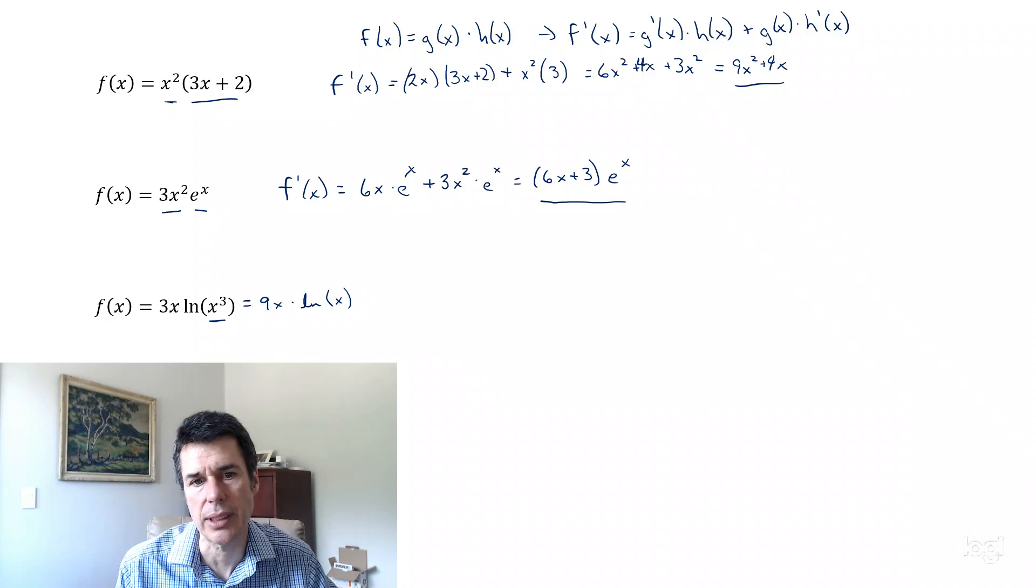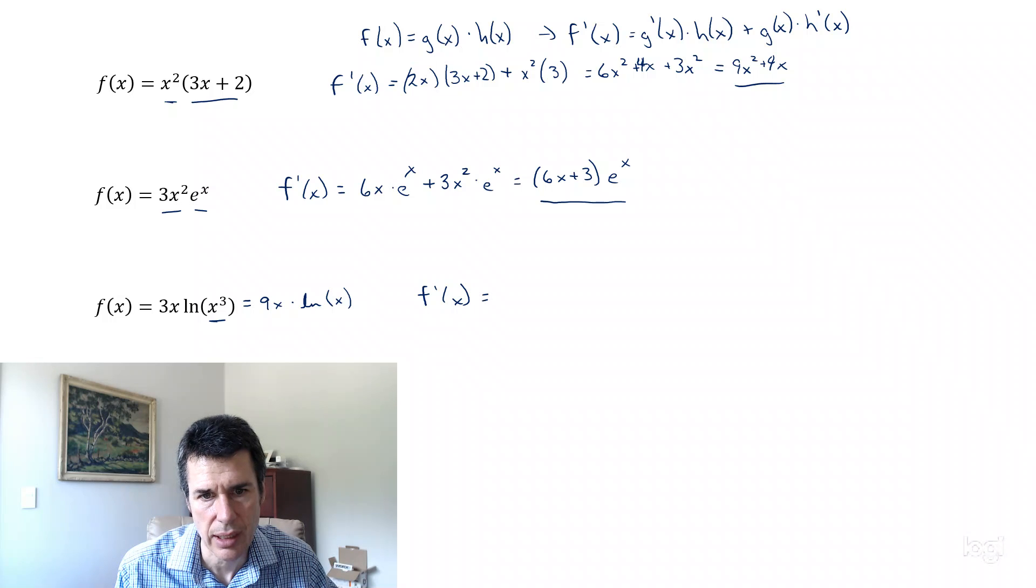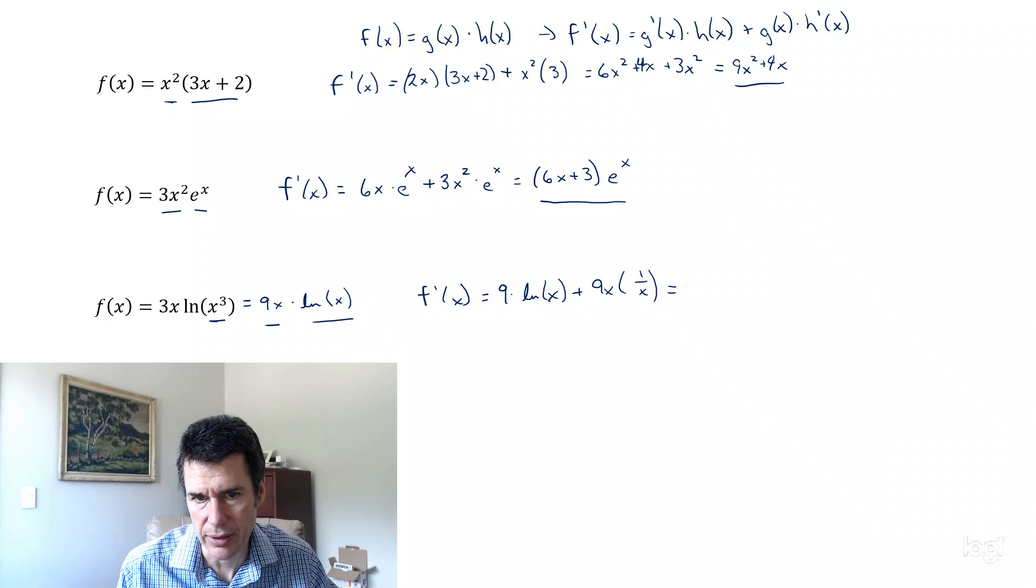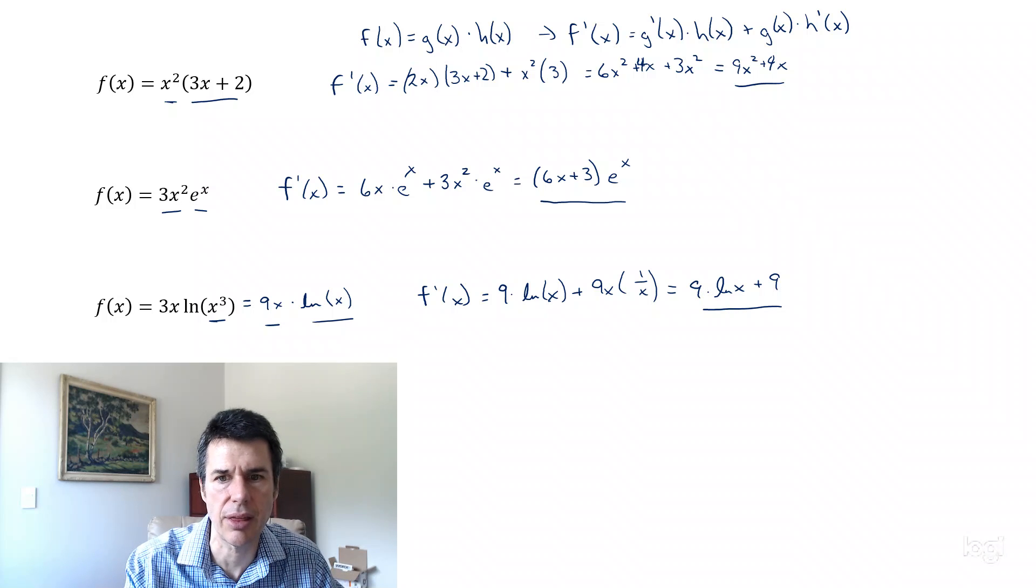Now we can take the derivative f'(x). First function is 9x, second function is natural log of x. So f'(x) equals 9 times natural log of x plus 9x times 1 over x. So that's just 9 times natural log of x plus 9. That's the derivative of the third function.